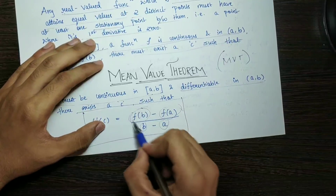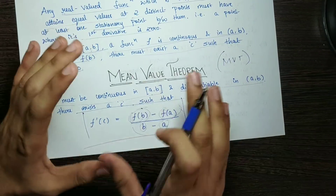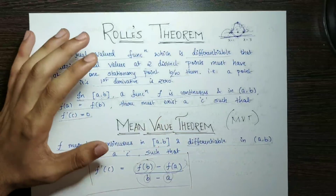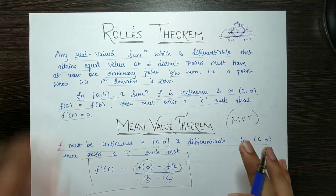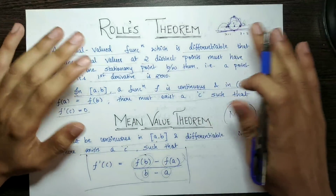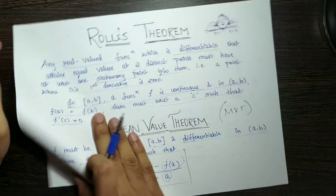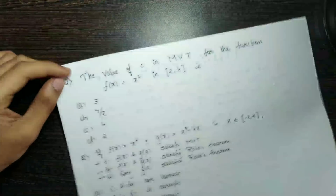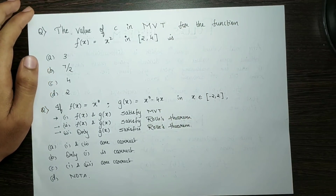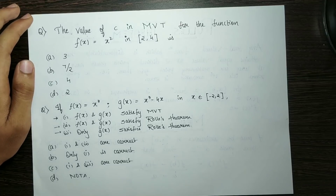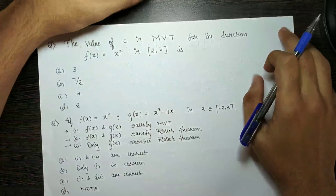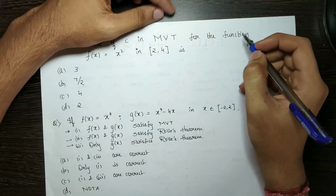So basically, f(b) minus f(a) divided by b minus a is what you need to solve. Here is a question: Find the value of c in the Mean Value Theorem for the function f(x) equals x² on the interval [2, 4].